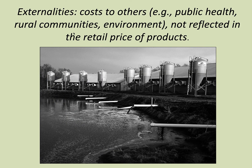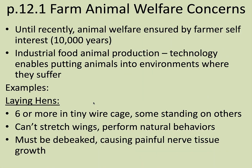There are real costs to public health, rural communities, and the environment. Farm animal welfare is something people are becoming more aware of. Until recently, animal welfare was assured by the farmer's self-interest — you wanted to keep that animal because it provided a workforce and sustained your family. Industrial food animal production technology enables putting animals in environments where they suffer. Normally if an animal is in a stressful situation, it doesn't thrive and could ultimately die, but technology like growth hormones and antibiotics allows animals to survive those conditions.